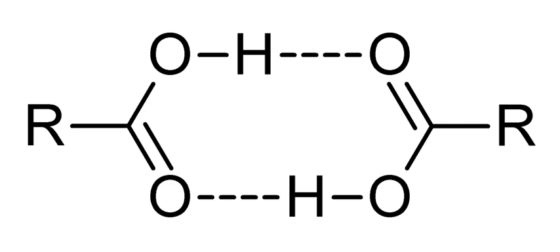Known metallic dimers include Li2, Na2, K2, Rb2 and Cs2. Many small organic molecules, most notably formaldehyde, easily form dimers. The dimer of formaldehyde is dioxetane.